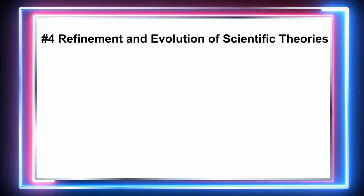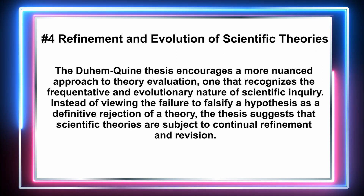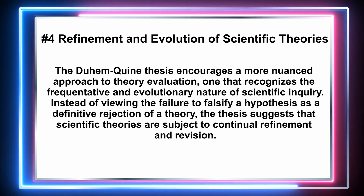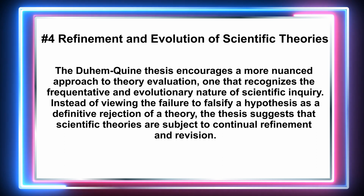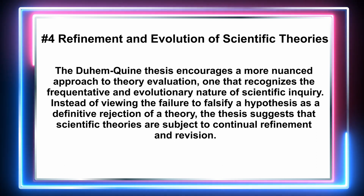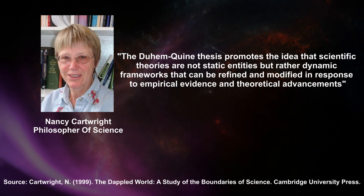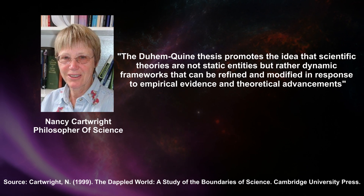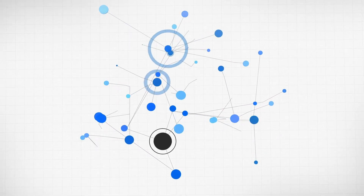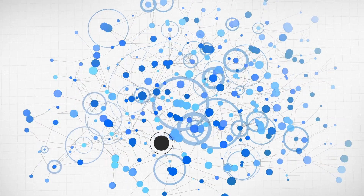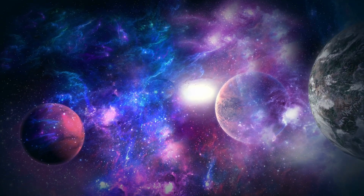Lastly, we have the refinement and evolution of scientific theories. The Duhem-Quine thesis encourages a more nuanced approach to theory evaluation that recognizes the iterative and evolutionary nature of scientific inquiry. Instead of viewing the failure to falsify a hypothesis as a definitive rejection of a theory, the thesis suggests that scientific theories are subject to continual refinement and revision. As physicist and philosopher Nancy Cartwright argues, scientific theories are not static entities but dynamic frameworks that can be refined and modified in response to empirical evidence and theoretical advancements. Scientists have the flexibility to modify auxiliary assumptions, reformulate hypotheses, or reconstruct the entire theoretical framework in light of new evidence.